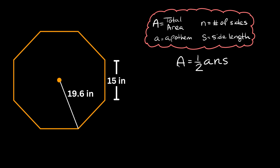To find the total area, let's find each of the three variables starting with little a — the apothem. The apothem is simply the distance from the center of the polygon down to one of the sides, and it hits that side at the midpoint, creating a right angle or 90-degree angle with that side.